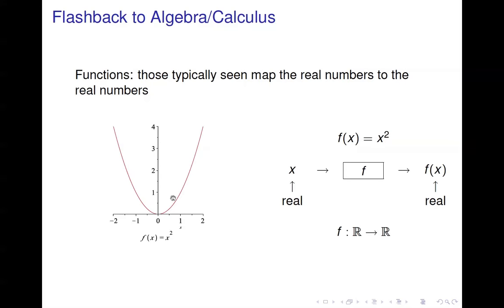For example, here's a graph of a function f(x) = x². You input a real number x, square it, and you get another real number. So it's mapping the real numbers to the real numbers. Here's a picture view: you're putting in a real number into your function, and what comes out is another real number. The notation here is that f is a function that maps the real numbers to the real numbers.